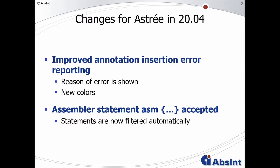We improved the error reporting of failed annotation insertion attempts. If you try to insert an annotation and this insertion process fails, for example because you have a parse error in your file, you now get a dialog that shows you the reason why the insertion failed. We also adapted the colors in the annotations view to be more consistent with the rest of the GUI.